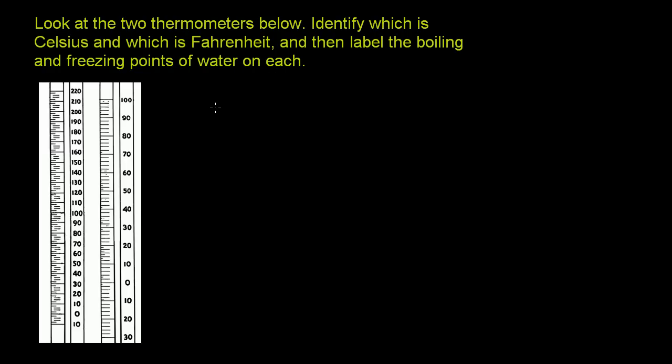Now the Celsius scale is what's used in most of the world. The easy way to tell that you're dealing with the Celsius scale is on the Celsius scale, 0 degrees is freezing of water at standard temperature and pressure, and 100 degrees is the boiling point of water at standard temperature and pressure.